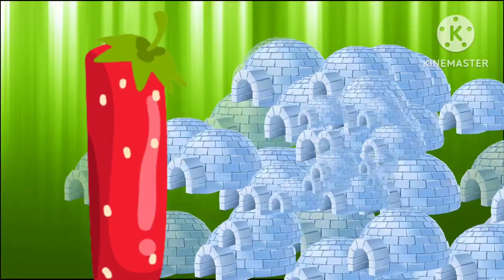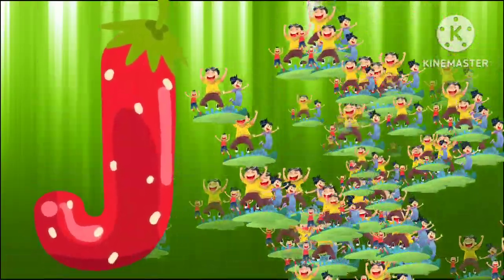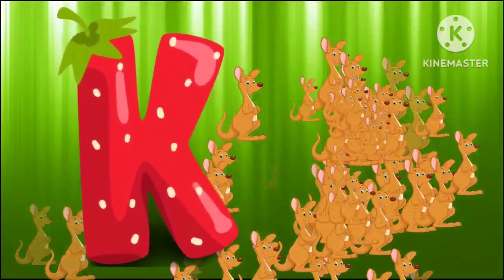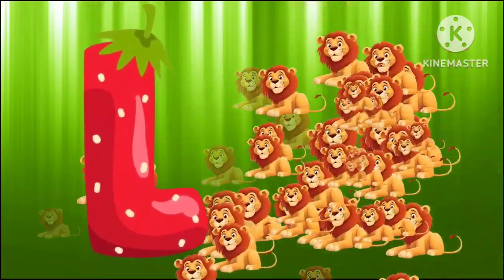I is for igloo, i-i-igloo. J is for jump, j-j-jump. K is for kangaroo, k-k-kangaroo. L is for lion, l-l-lion.